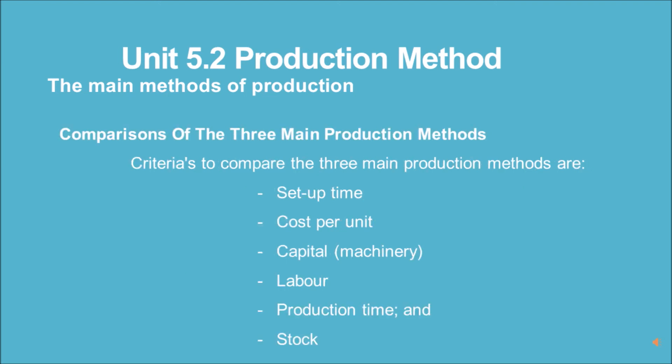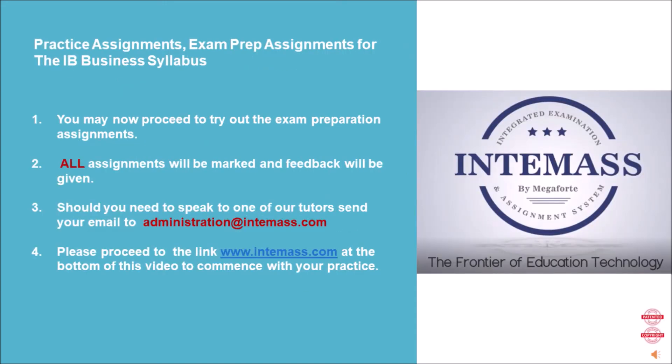Comparisons of the three main production methods: the criteria used to compare job, batch, and mass production are set-up time, cost per unit, capital machinery, labor, production time, and stock.